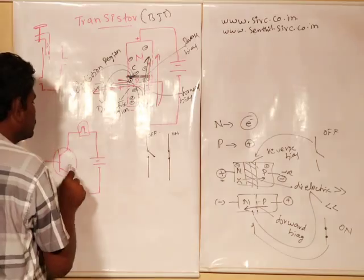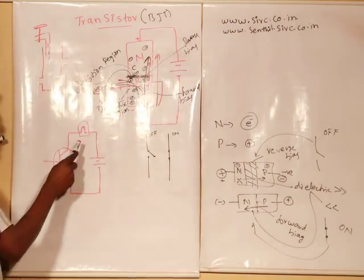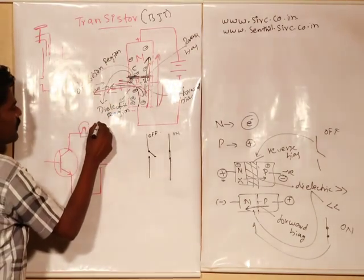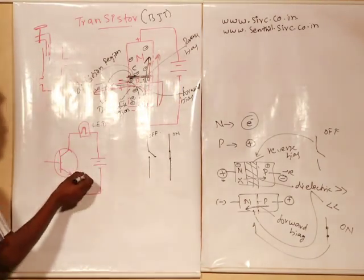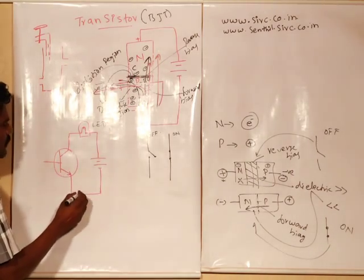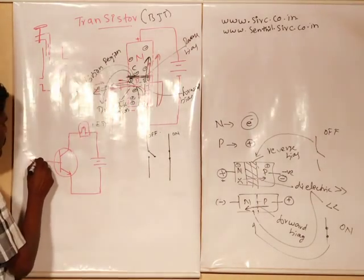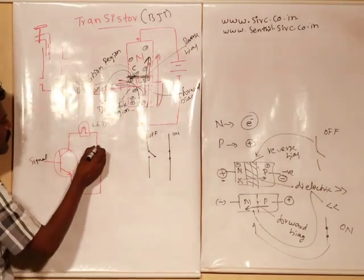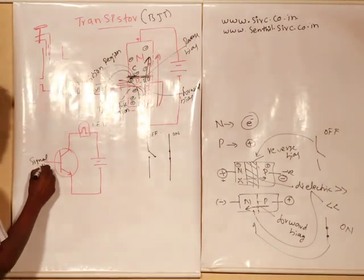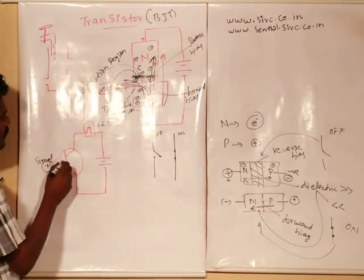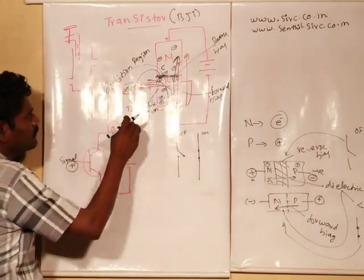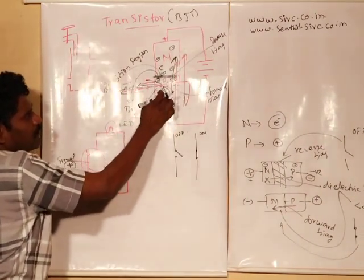This NPN transistor circuit has been represented here. I am connecting an LED — this is the LED. When I am giving the power supply to the LED and giving the power supply here, when I am giving the signal to here, the current will move from here to here. When I am giving this current to the base, this region is in reverse bias and this is in forward bias.